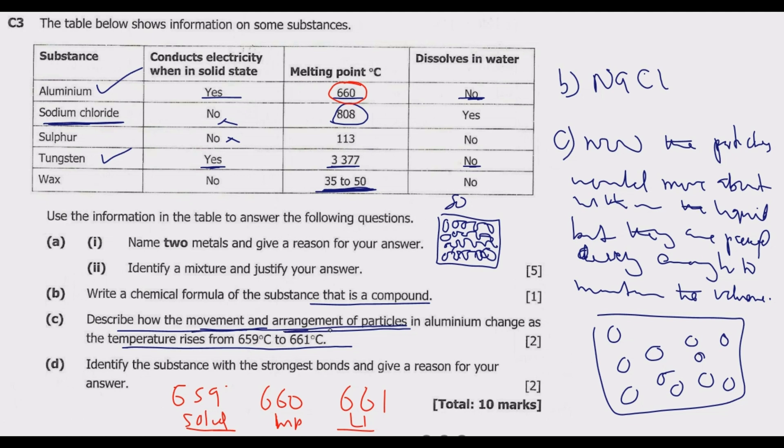Question D: Identify the substance with the strongest bonds and give a reason for your answer. The strongest bond is among ionic bonds. Ionic bonds typically have the stronger bond compared to other bonds. The second is the covalent bonds which happens between non-metals. Then the last one is metallic bond.